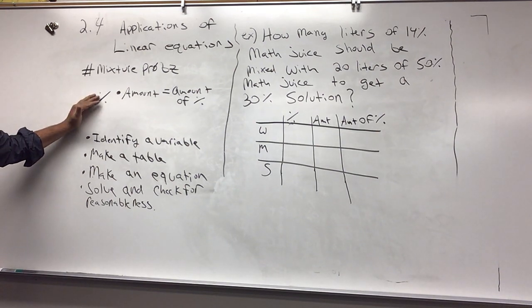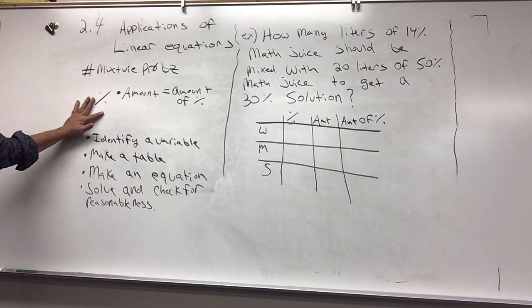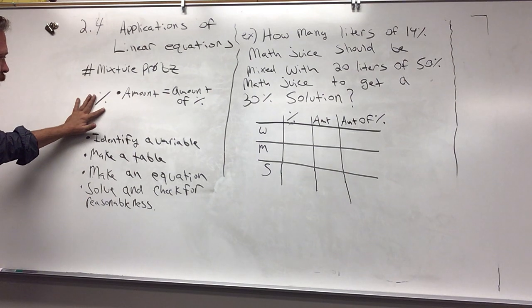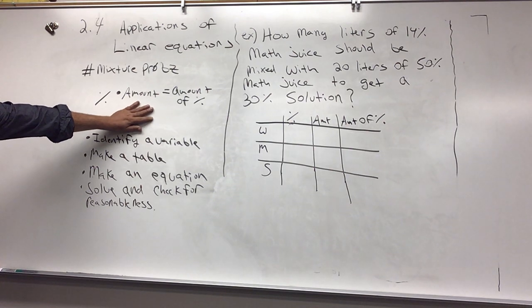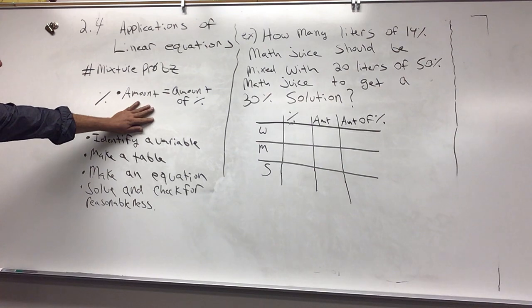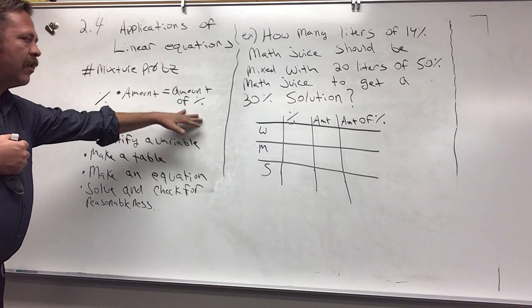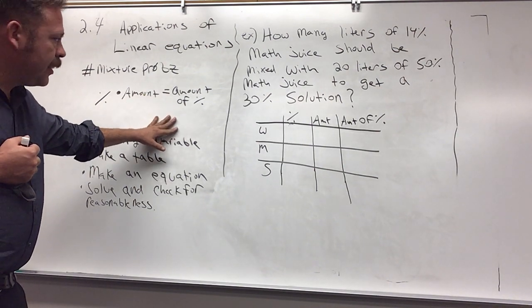The formula that we're going to use for a mixture problem would be the percent strength, the percent, times the amount of the solution that you're mixing, like whether it's gallons or liters or however we measure a liquid that we're mixing, equals the amount of percent.